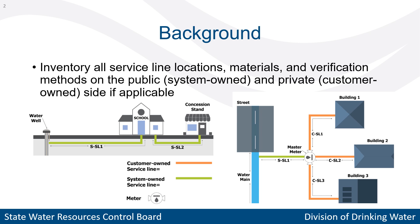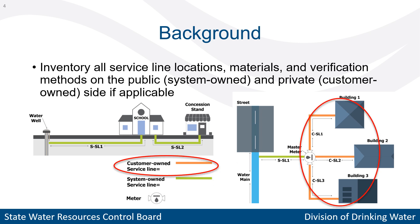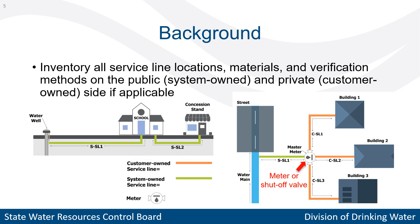For systems with split ownership of service lines, generally the portion from the main to the meter is system-owned, while the portion from the meter to the house or building is customer-owned. Shutoff valves can also be used to distinguish between system-owned and customer-owned sides if meters aren't accessible or available.